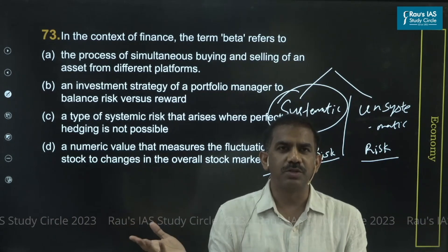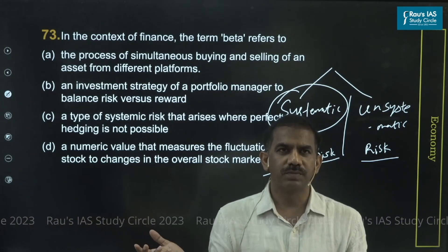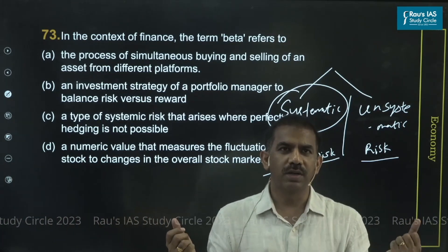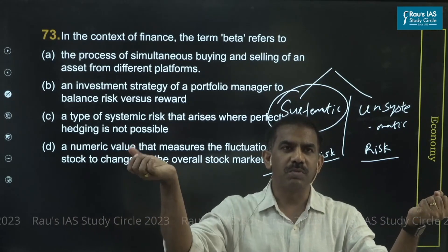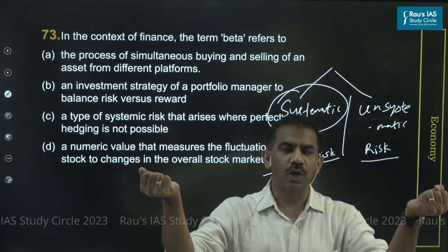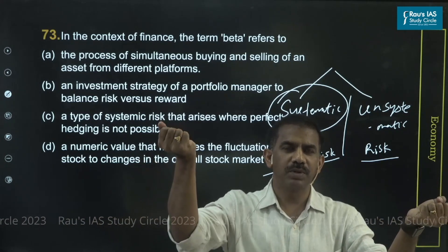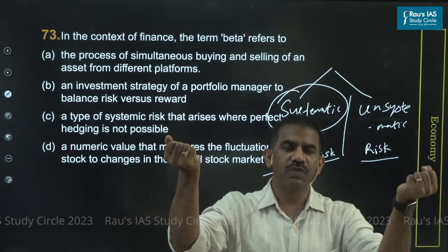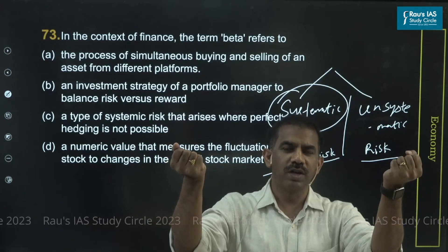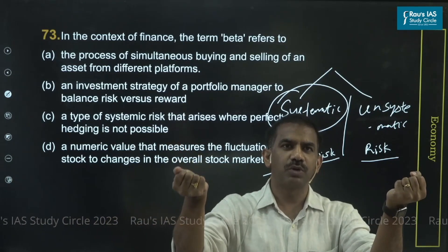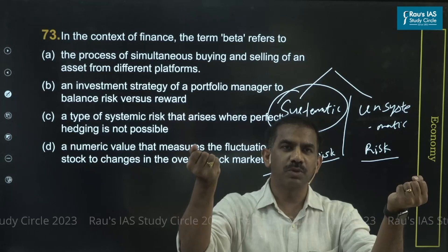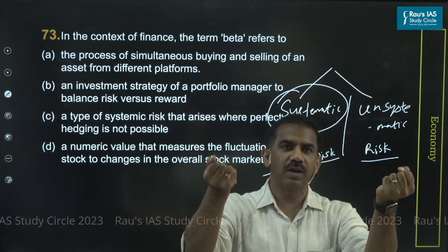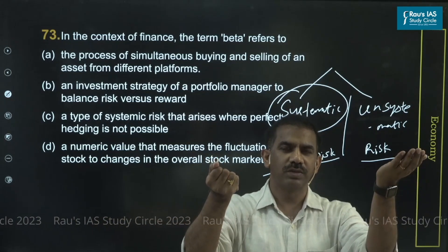And then the term beta - what does beta refer to? Beta is simply the number that helps you understand how volatile your stock is with respect to the market. How volatile is your stock with respect to the market? If the market moves up, by what extent does your stock move? If your stock happens to have a beta of more than one, it means it is relatively more volatile than the market - it happens to react much more compared to the market.